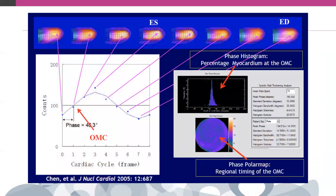Nuclear imaging has long represented the only technique to obtain quantitative measures of ventricular dyssynchrony. The concept behind assessment with nuclear techniques is the application of Fourier harmonic phase analysis to gated datasets to define the moment in which each myocardial segment starts to contract — the onset of mechanical activation. This analysis is feasible with all gated nuclear imaging techniques, including blood pool gating, first-pass ventriculography, as well as perfusion single photon emission computed tomography.